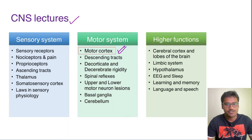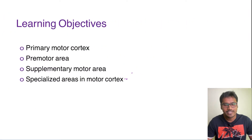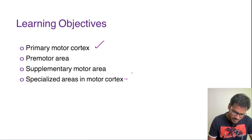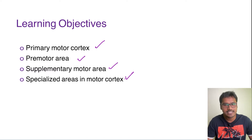Let us dive into our discussion of the motor cortex. Today we will be discussing under these subheadings: the primary motor cortex, premotor cortex, supplementary motor area, and finally the specialized areas in the motor cortex.